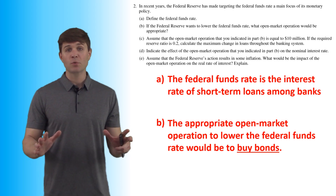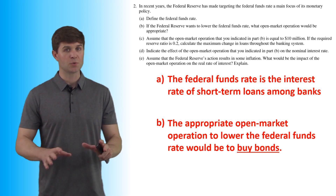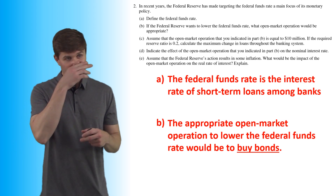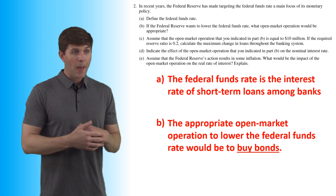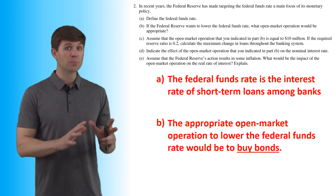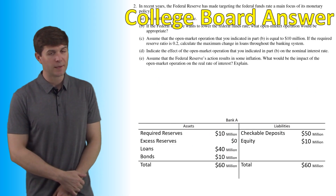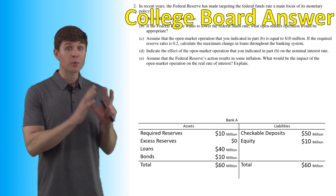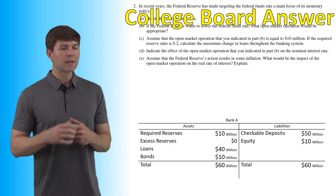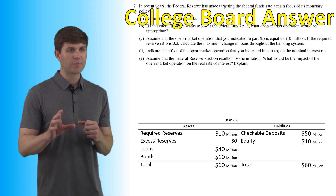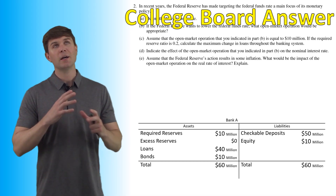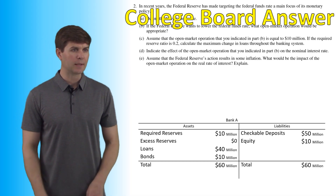Now everything in this question up to this point is very cut and dry. Part C is a little bit more confusing and the way that I did it initially isn't quite the way that the College Board had the answer. I'm going to go over the College Board answer and my approach, because I believe they would have accepted both answers if worded a certain way.